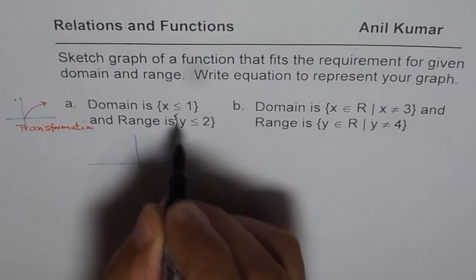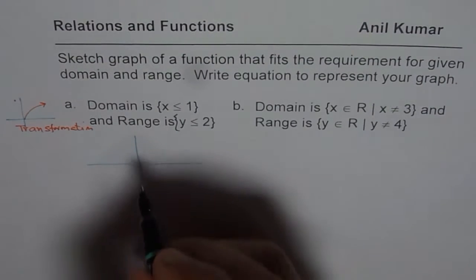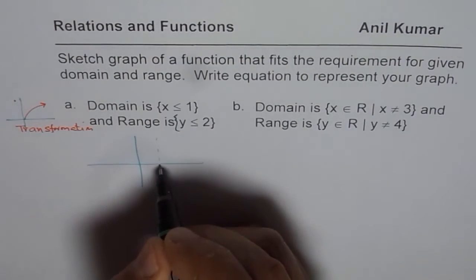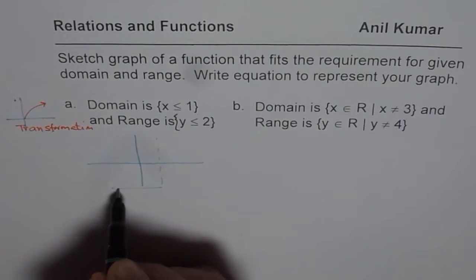It says, domain is less than equal to 1. That means, if this is 1 for us, then domain is on the left side. So we have to go to the left side of this value.